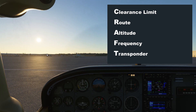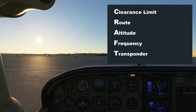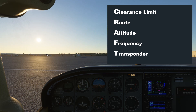The structure of an IFR clearance gives us the handy acronym CRAFT: C-R-A-F-T — Clearance limit, Route, Altitude, Frequency, and Transponder. We're going to use that acronym to structure and write down our IFR clearance so it's easy to understand and easy to read back once the controller gives it to us.